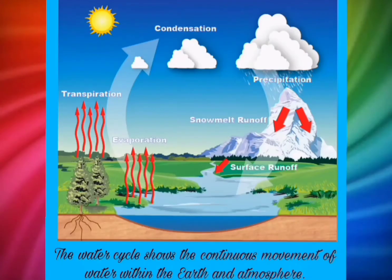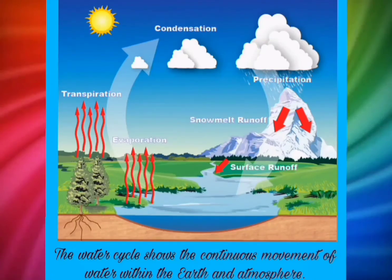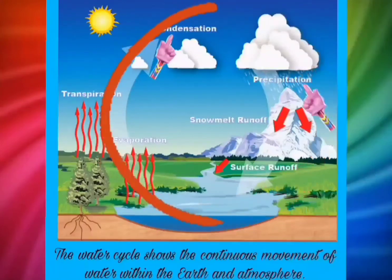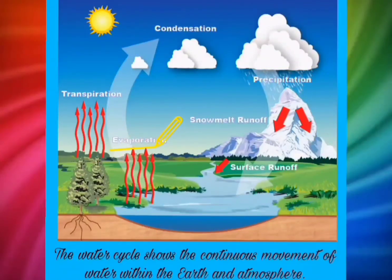The water cycle shows the continuous movement of water within the earth and atmosphere. It is a simple circular cycle of evaporation, condensation, and precipitation. For evaporation to happen, energy is needed. The energy can come from any sources.